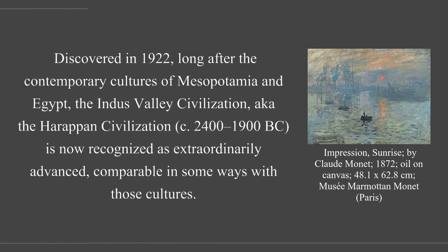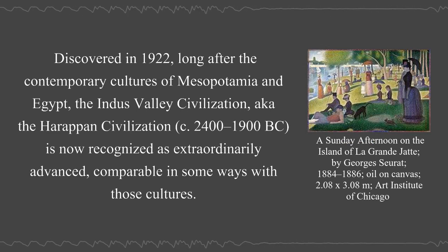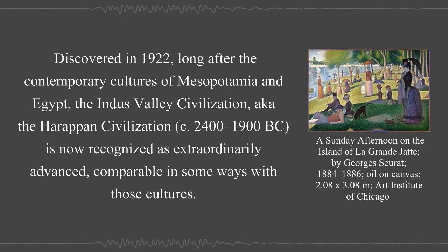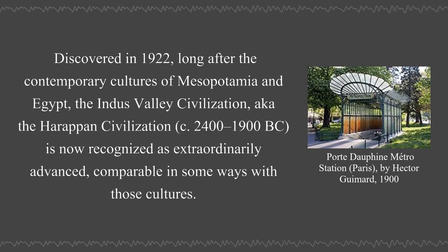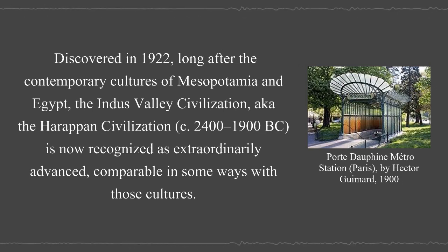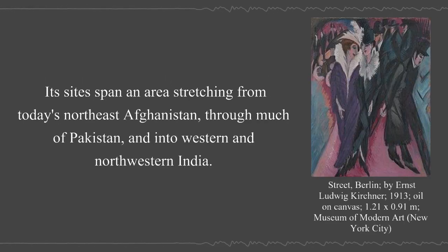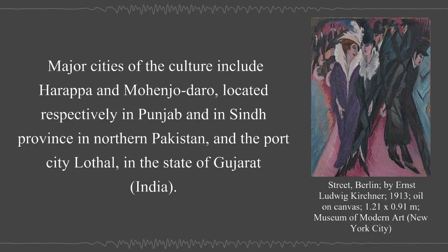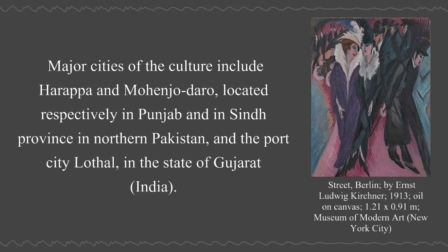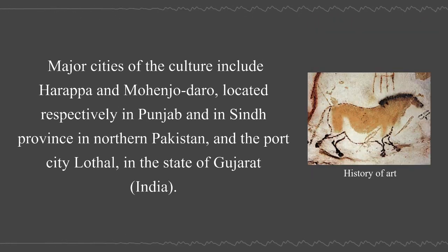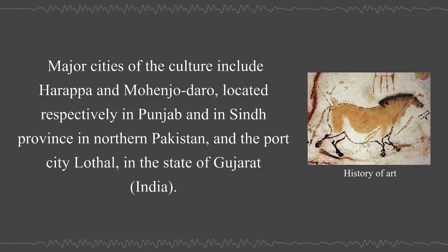Discovered in 1922, long after the contemporary cultures of Mesopotamia and Egypt, the Indus Valley civilization, also known as the Harappan civilization circa 2400–1900 BCE, is now recognized as extraordinarily advanced, comparable in some ways with those cultures. Its sites span an area stretching from today's northeast Afghanistan through much of Pakistan and into western and northwestern India. Major cities include Harappa and Mohenjo-daro, located in Punjab and Sindh province in northern Pakistan, and the port city Lothal, in the state of Gujarat, India.